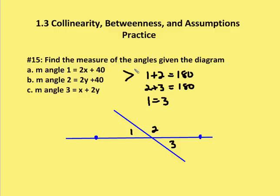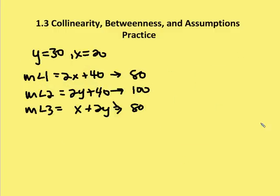Now that we have x equal to 20 and y equal to 30, we can solve for each of the angles. The measure of angle 1 is 2 times 20 plus 40, which is 80 degrees. The measure of angle 2 is 2 times 30 plus 40, which equals 100 degrees.